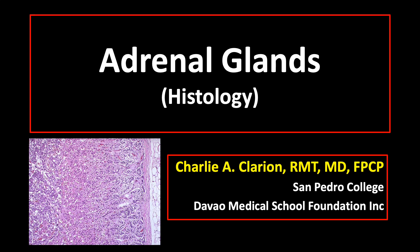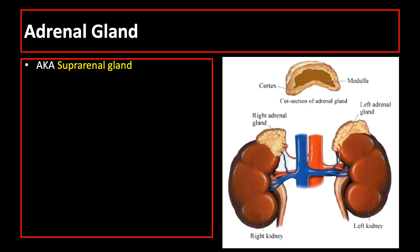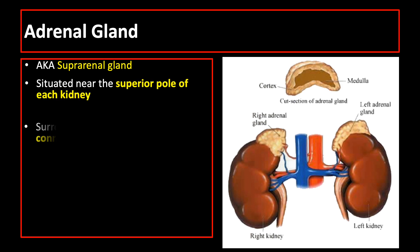Good morning, students. Our topic for today is about the histology of the adrenal glands. The adrenal glands, also known as suprarenal glands, are paired organs lying near the superior pole of each kidney.